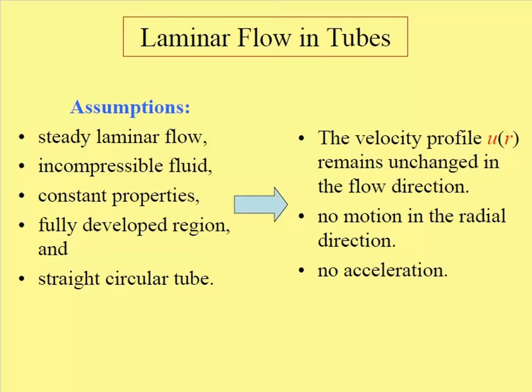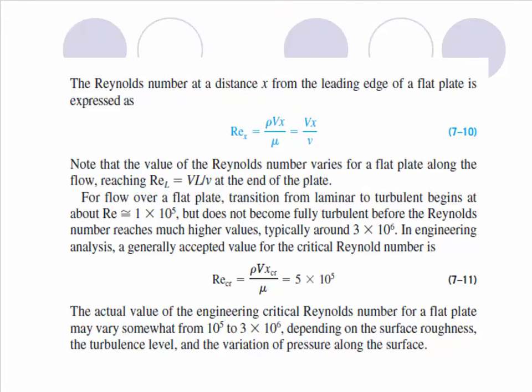For laminar flow in tubes, several assumptions are taken: the flow should be steady laminar flow, the fluid should be incompressible with constant properties, it should be in the fully developed region, and the tube should be a straight circular tube. The velocity profile remains unchanged in the flow direction, with no motion in the radial direction and no acceleration considered during this flow.